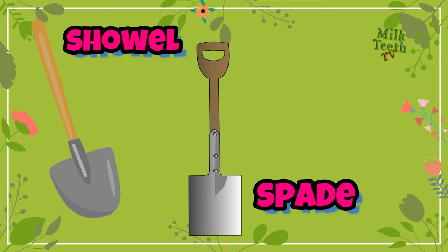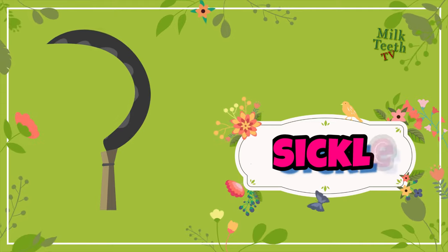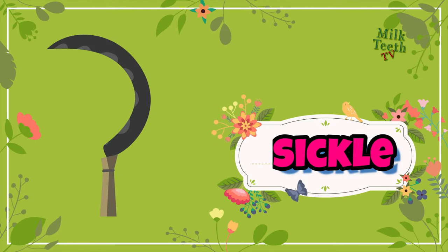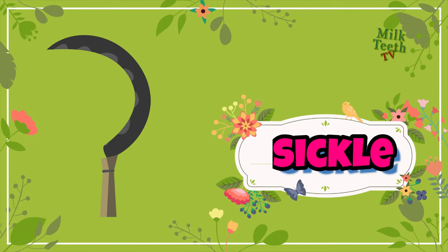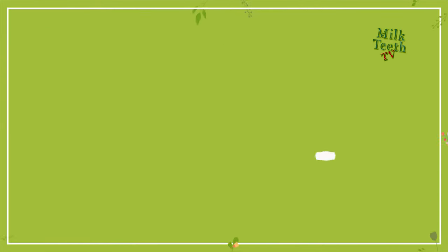It is used for digging, picking up, and cutting into the soil. This is a trowel. A trowel is a hand tool used for digging and smoothing of soil, and also for taking up things like plants and earth and transporting them. This is a sickle — a moon-shaped knife used for cutting off leaves and crops.